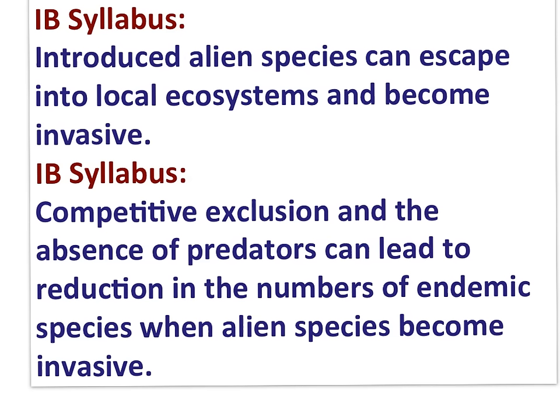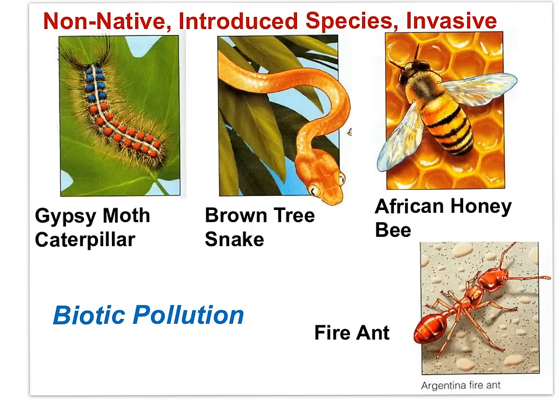Introduced alien species can escape into local ecosystems and become invasive. Competitive exclusion and the absence of predators can lead to reduction in the numbers of endemic species when alien species become invasive. Invasive species, also known as non-native species or alien species, are introduced to an ecosystem accidentally or purposefully by people. Without natural biological predators or disease, invasive species exclude native species, spread rapidly, and reduce local diversity. Invasive species could be thought of as a biotic pollution.